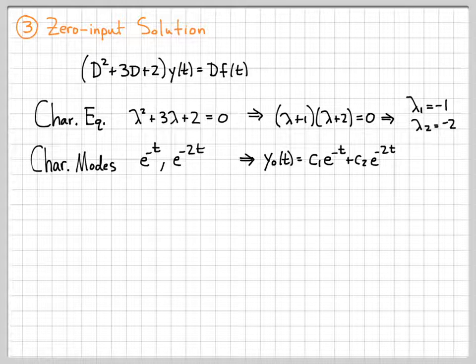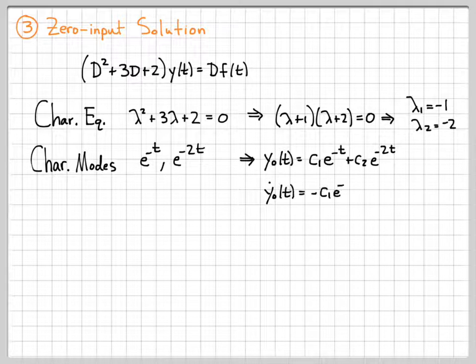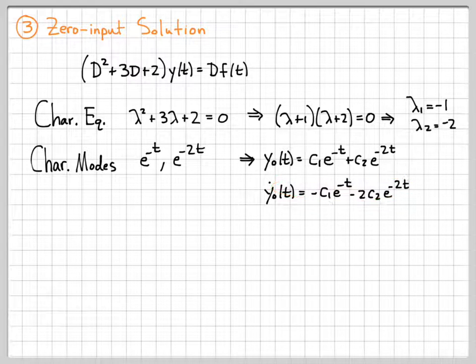What I need to do now is solve for c1 and c2 using the initial conditions that we derived in the previous video. Those initial conditions involve the derivative of y at zero, so let's go ahead and take the derivative. Taking the derivative is easy — we end up with this equation right here.